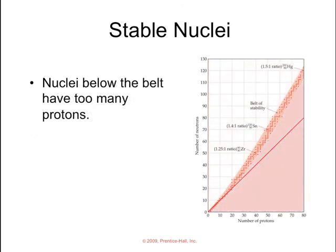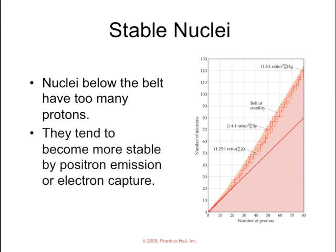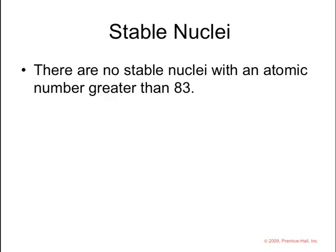Nuclei below the belt of stability have too many protons, so they're going to become more stable by either positron emission or electron capture, really making a proton into a neutron and bringing the nuclei into that belt of stability.